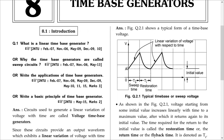The linear portion of the waveform is called the sweep time. In this linear portion the voltage is changing from an initial value to some final value. Since the waveform is periodic, after reaching the final value it traces back so it is ready for the next cycle. The time taken to trace back is called the restoration time, also called return time or flyback time. Usually the restoration time Tr is much less than the sweep time.